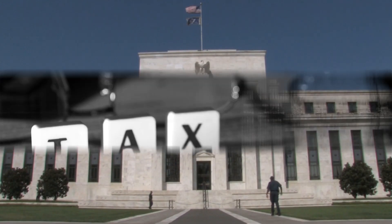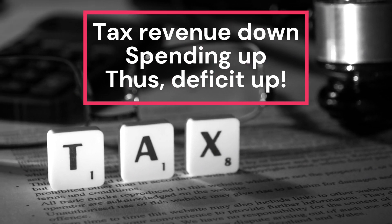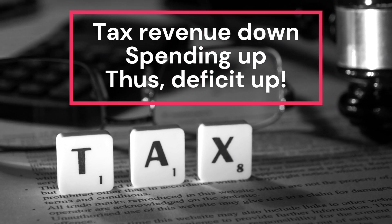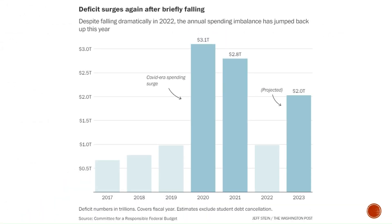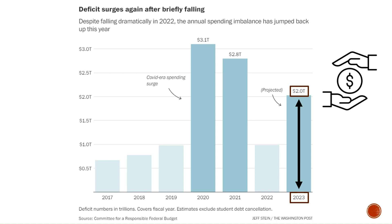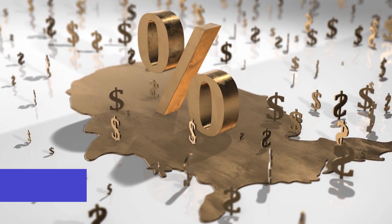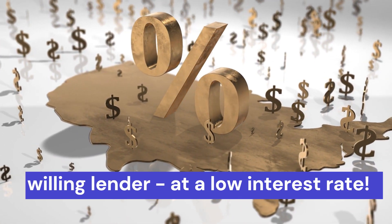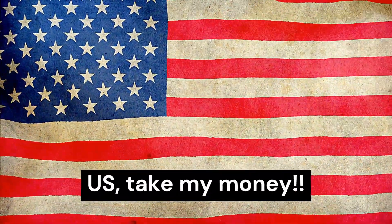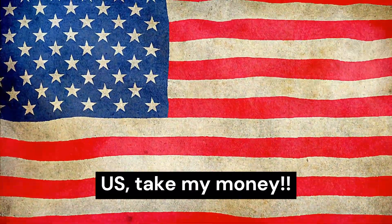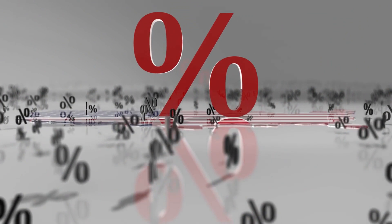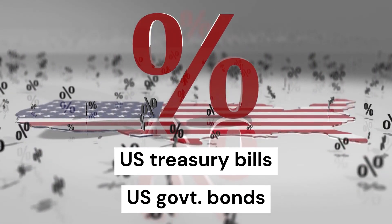Put it all together and you have a situation where the government's income is going down and expenses are rising. The US government is going to spend $2 trillion more than what it brings in this year, and they will have to borrow the difference. On the other side of that equation, there needs to be someone willing to lend to the US government, and that too at a reasonable price. This is where the United States stands taller than almost everyone else — there is no dearth of entities willing to lend to the US government.